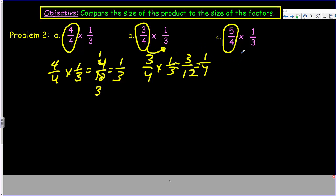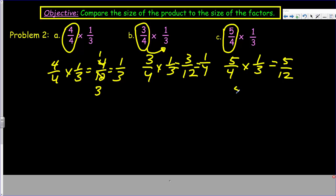Now let's look at the last one. Here our scaling factor is greater than 1. The last time that occurred, we ended up with a product greater than both factors. And in this case that's true — we end up with 5 twelfths, and 5 twelfths is almost one-half. It's larger. 5 fourths times one-third is 5 twelfths — it became larger than one-third, almost became a half. 5 fourths times one-third is going to be greater than one-third because we multiplied it with a number greater than 1.